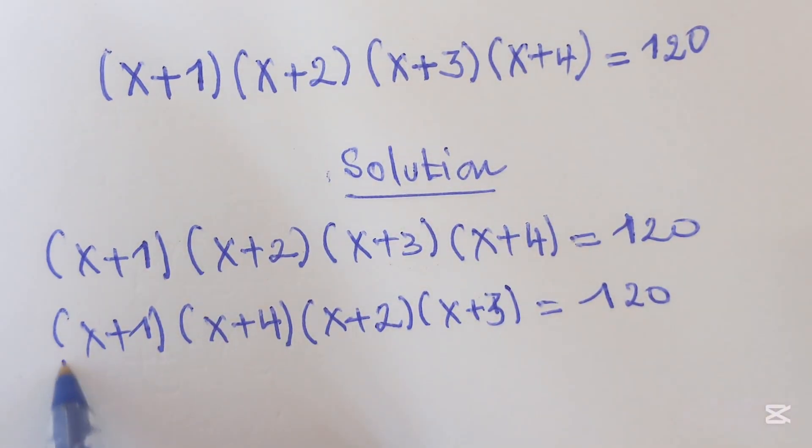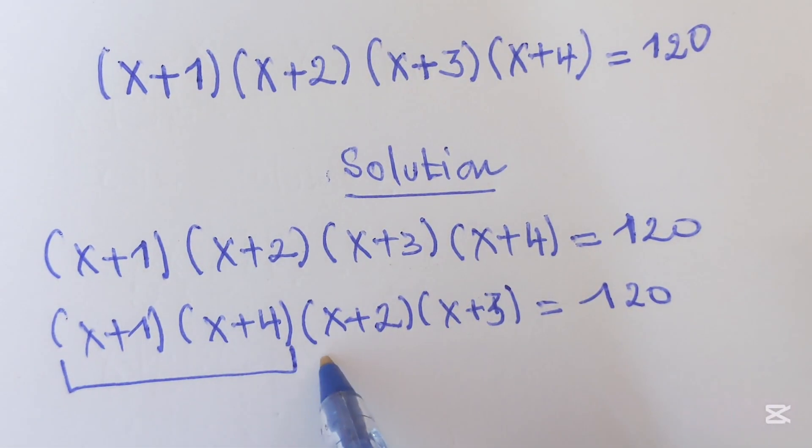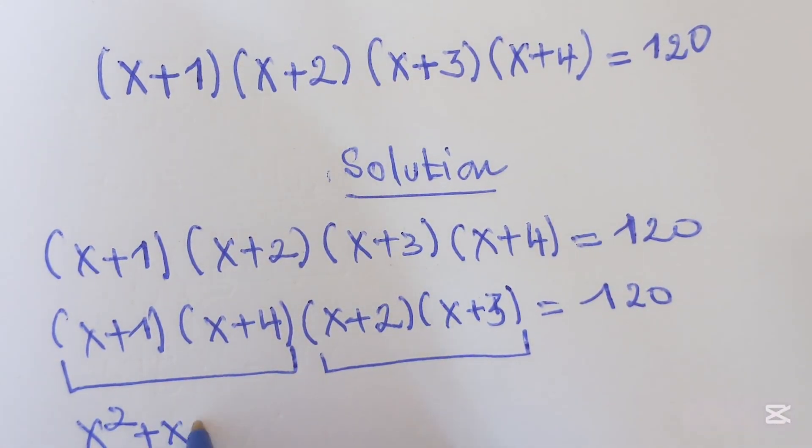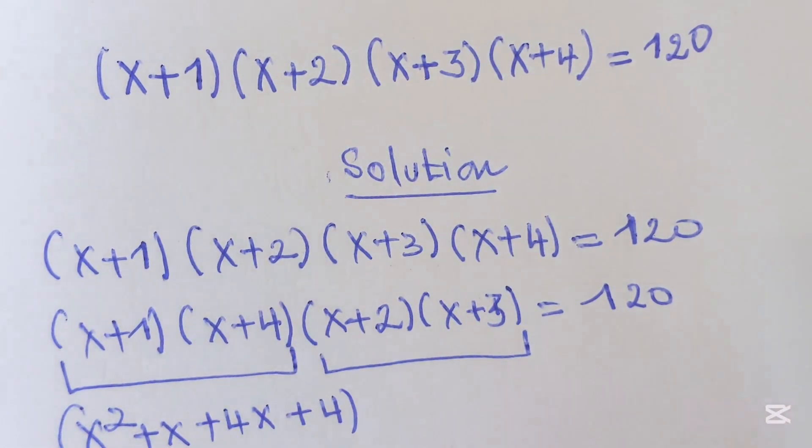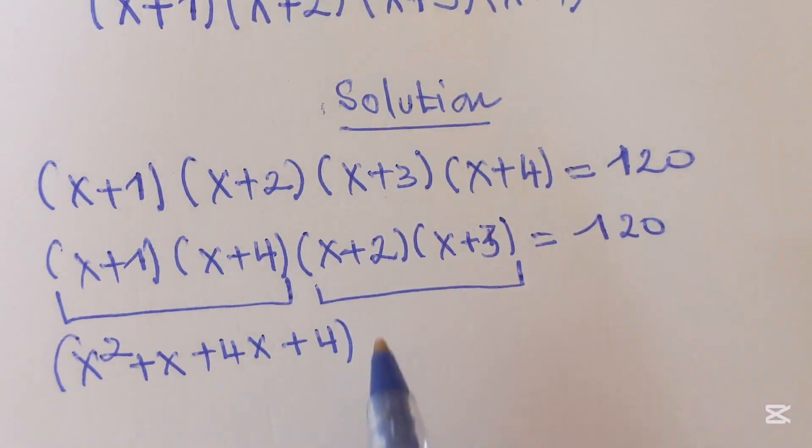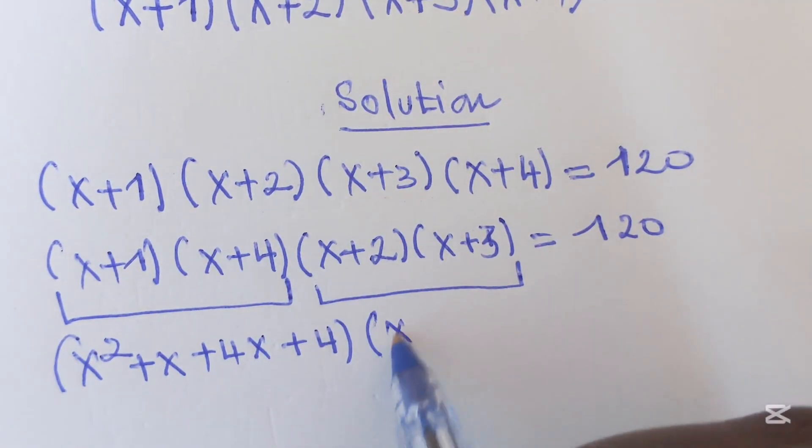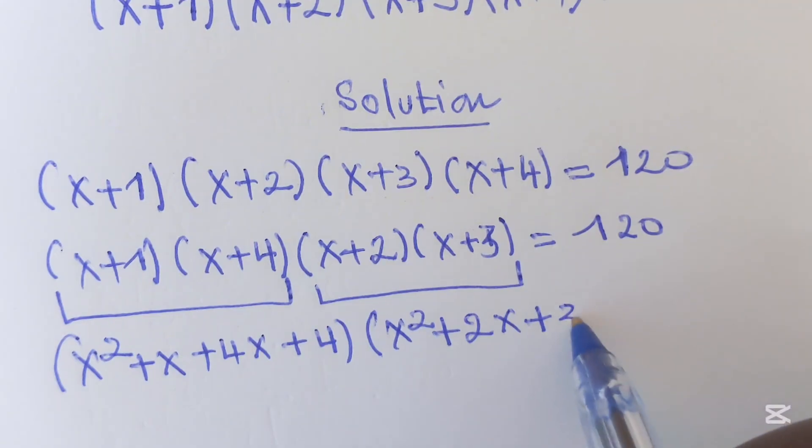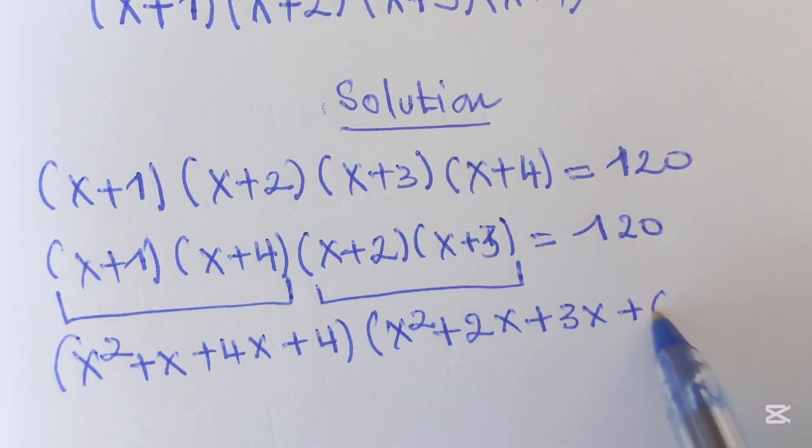After here, we can multiply this and multiply this together to get here x squared plus x plus 4x plus 4, then times x squared plus 2x plus 3x plus 6, which equals to 120.